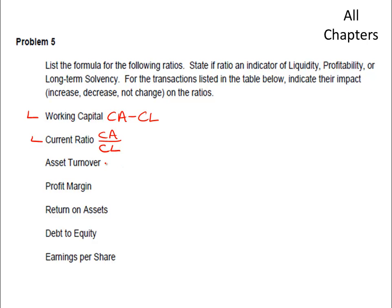Asset turnover is revenue divided by average total assets. Average total assets is beginning-of-year total assets plus end-of-year total assets divided by 2 — a simple average of the beginning and ending total assets. Asset turnover is a profitability ratio that shows how well you're utilizing your assets to generate revenue.